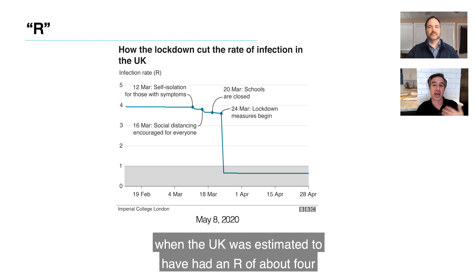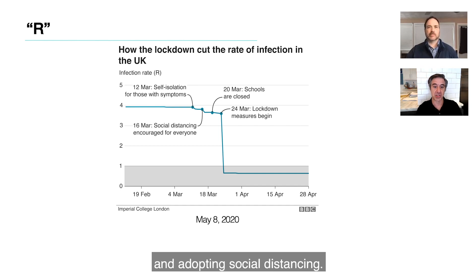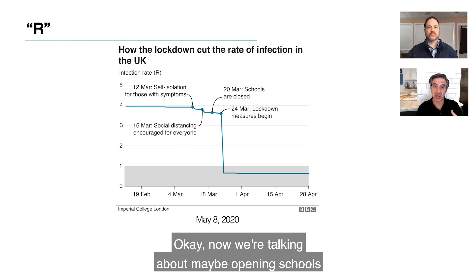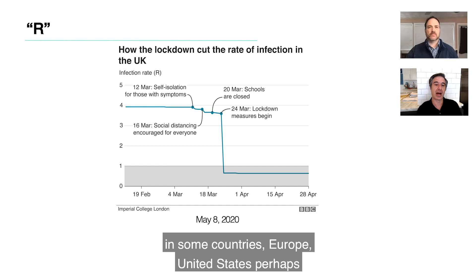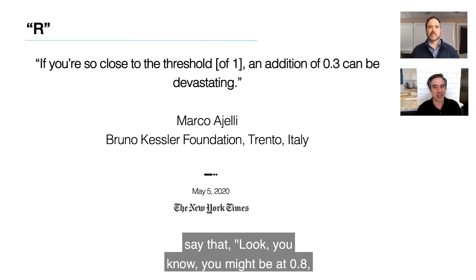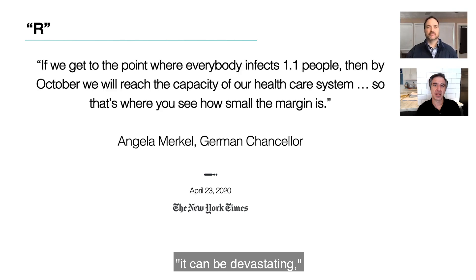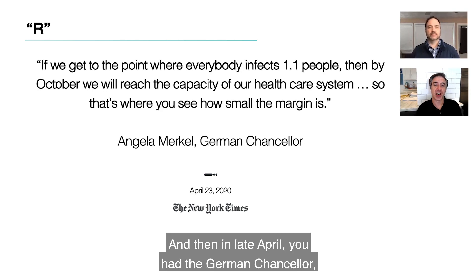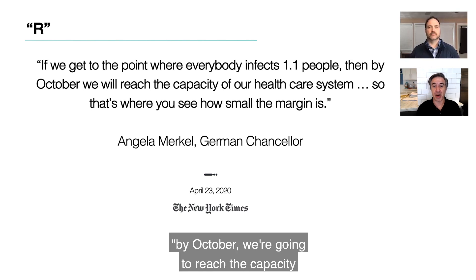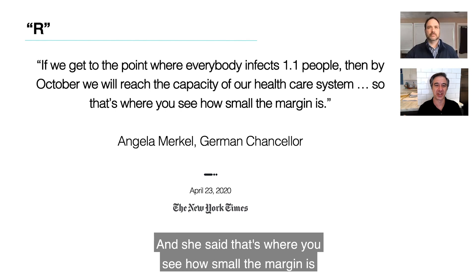You see this graphic from the BBC when the UK was estimated to have had an R of about 4 in early March. They got it below 1 by the end of the month by closing schools and adopting social distancing. Now we're talking about maybe opening schools in some countries, and epidemiological expert Marco Augelli in Italy said that if you're at 0.8, opening schools might add 0.3, and all of a sudden you're back at 1.1 — it can be devastating. In late April, German Chancellor Angela Merkel said that 1.1 might sound great, but if we have a 1.1 for a while, by October we'll reach the capacity of our healthcare system — and if it was 1.2, we'd reach it in June. She said that's where you see how small the margin is.